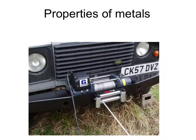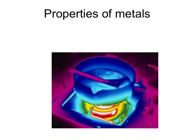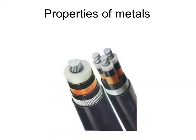This Land Rover cable is made out of steel because it's got a high tensile strength, meaning the cable can take a lot of weight before snapping. This cauldron is made of steel because it has a very high melting point. The bottom of this saucepan is made out of steel because steel is a very good conductor of heat. These cables have an aluminium core because aluminium is a very good conductor of electricity.